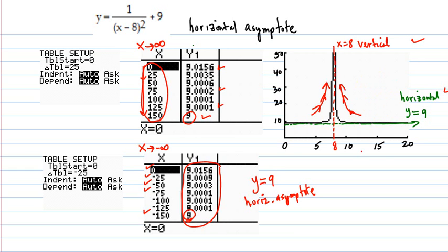And as the values of x go to infinity, the y values come down to 9. And as you go to negative infinity going this way, the values come down to 9.